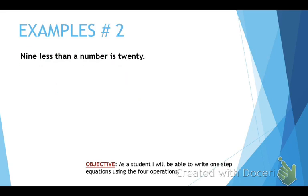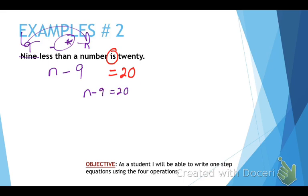Example number two. 9 less than a number is 20. Once again, we found is. That means equal. We have 20. At the top, we have 9 less than. That means subtraction. And I'm pretty sure it has a star next to it. And it's less than what? Well, it's less than a number. What do I use when I don't know what the number is? A variable. I'm going to use n again. Now, because I have that star, I need to flip these two around. So I'm going to get n minus 9. So that is 9 less than a number n is 20. So n minus 9 equals 20. That's your answer.